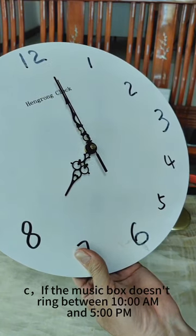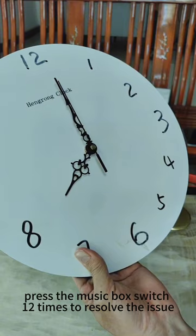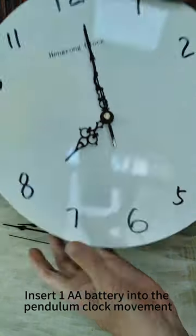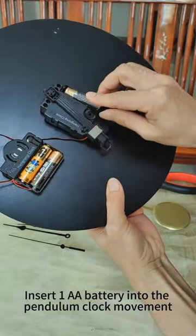C. If the music box doesn't ring between 10 o'clock and 5 o'clock, press the music box switch 12 times to resolve the issue. Insert 1 AA battery into the pendulum clock movement.